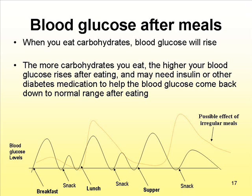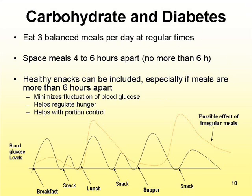What can we do to help prevent the rise in blood glucose after eating? You need to eat three balanced meals per day at regular times. You also need to space your meals four to six hours apart — no more than six hours. Healthy snacks can be included, especially if meals are more than six hours apart. Healthy snacks minimize fluctuation of blood glucose, help regulate hunger, and will help you with portion control.